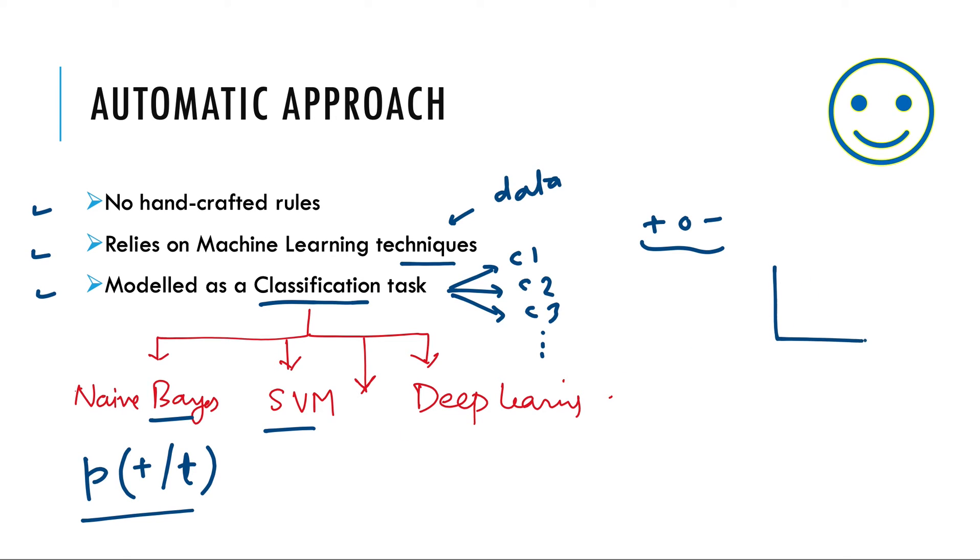In SVM, you map the different examples, different reviews or different texts to different points in a multi-dimensional space. In this approach, it will be assumed that all the texts belonging to one sentiment map to some fixed region in this multi-dimensional space, and the texts belonging to other sentiments map to some different region. And when you are given a new data, the new data maps to this region. You will see that this maps to positive sentiment region. So you will classify it as positive sentiment.